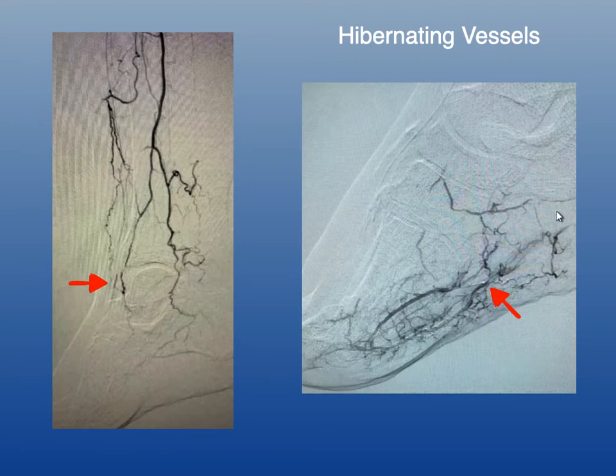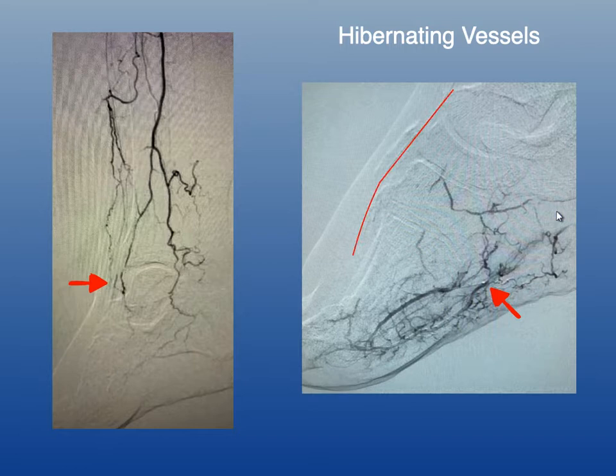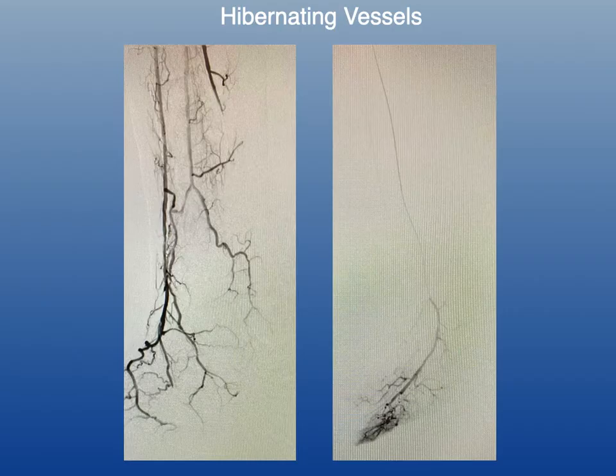Here are a couple examples of hibernating vessels. This CLI patient has a stump of a dorsalis pedis artery on the left, and we weren't sure whether the vessels in the foot were completely occluded with no hibernating lumen, or whether we had hibernating vessels. Once I crossed the CTO, you can see robust filling of numerous vessels in the foot, showing there were a lot more hibernating vessels here than we thought.